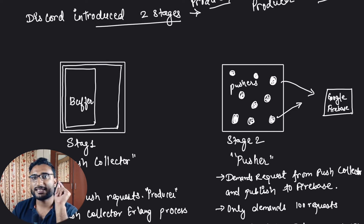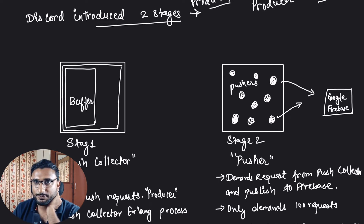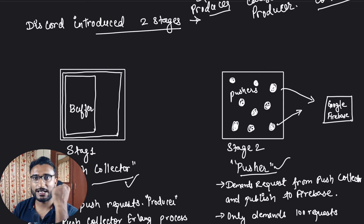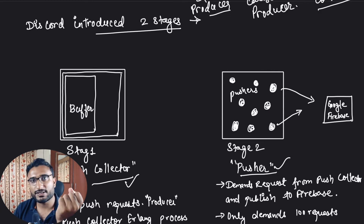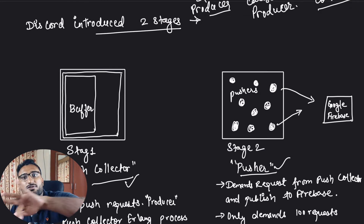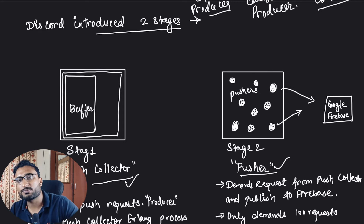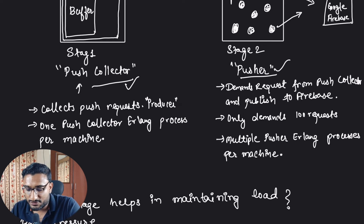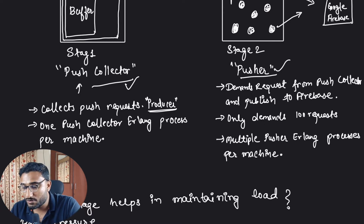In Discord's architecture specifically, they introduced two stages. Stage 1 is your push collector and Stage 2 is your pusher. The push collector collects the messages to be pushed — it acts as a producer. The pusher actually pushes the messages to Google Firebase, which further directs the messages to actual clients on their mobile devices.